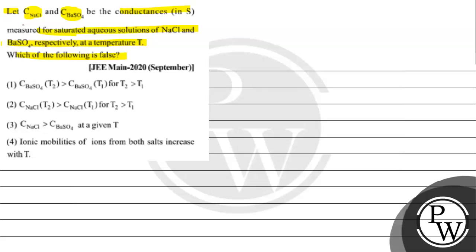Option 3 is conductance of NaCl is greater than conductance of BaSO4 at a given temperature. Option 4 is ionic mobilities from both salts increase with temperature.